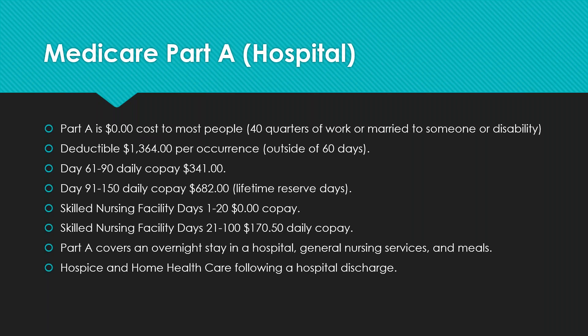Let's talk about the different parts of Medicare. Whether you're already on Medicare or transitioning to it, you've probably been getting a lot of information in the mail. Medicare is essentially divided into four parts. The first part is Part A — A as in apple — often referred to as hospital coverage. It's on your card in parentheses with the word 'hospital.'